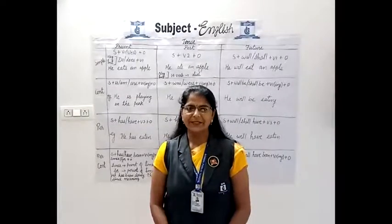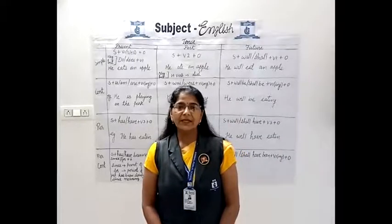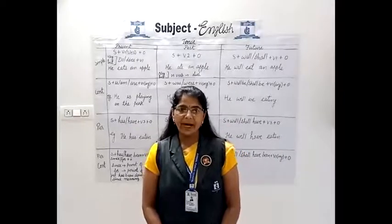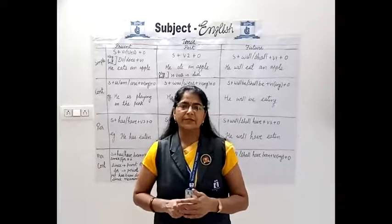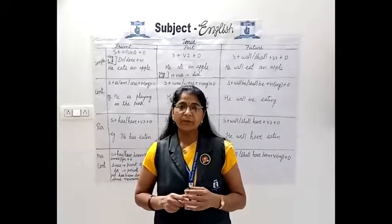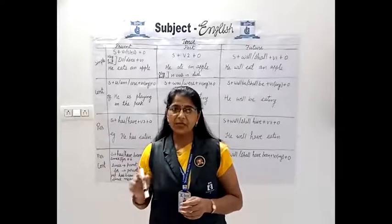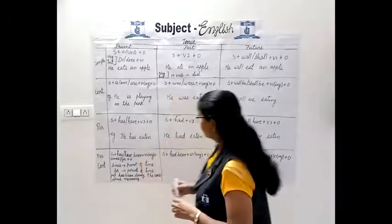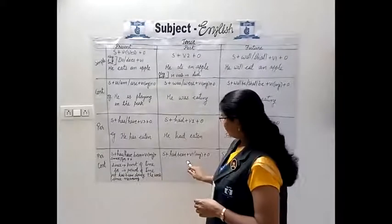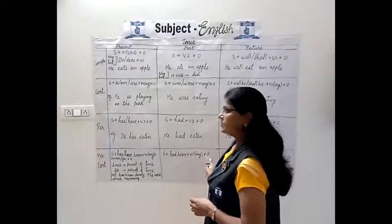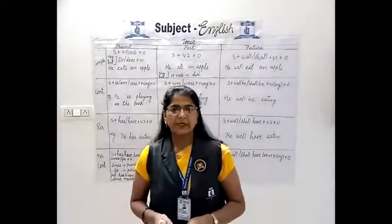Now, past perfect continuous tense — an action that occurred before a certain point of time in the past and had continued up to that moment and was still in progress. Example: 'The players had been playing for 3 hours.' Structure: subject plus had been plus V1-ing plus object.